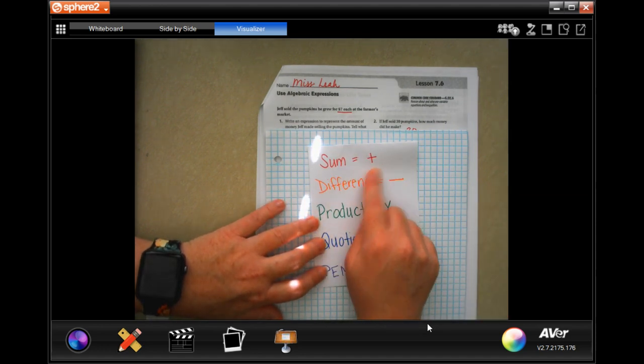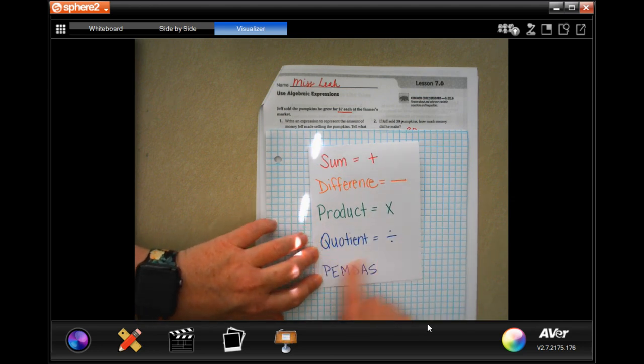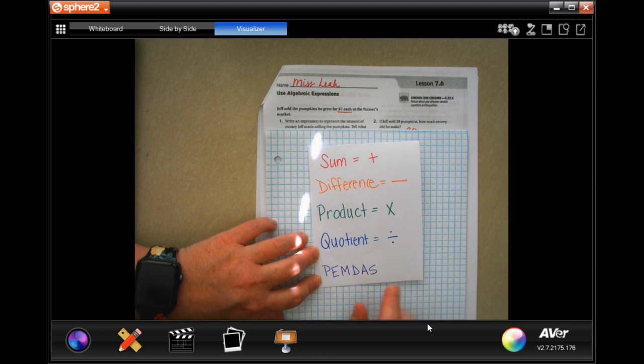So the sum means adding, the difference means subtracting, product of means multiplying, and quotient means dividing, and don't forget your PEMDAS.